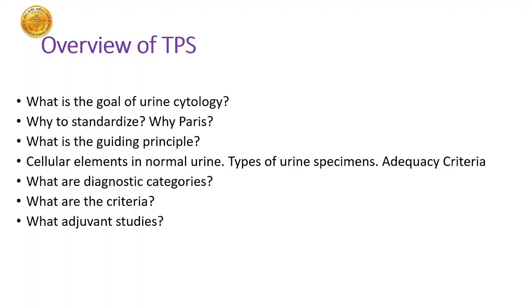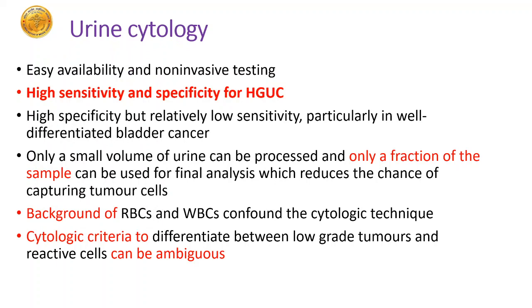We'll now come to the Paris system, abbreviated as TPS. What is the goal of urine cytology? Why do we need this system? Why standardize? Why Paris and not Bethesda? I will touch a bit on the guiding principle, cellular elements in normal urine, types of urine specimens, adequacy criteria, the various diagnostic categories of TPS, and any adjuvant studies.